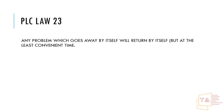Any problem which goes away by itself will return by itself — but always at the least convenient time. For example, if you go to a machine and say it is a sensor problem, you check the sensor and it looks correct, so you leave. Then again the sensor problem comes back. Monitor the machine — check signal quality, distance, and signal status to catch intermittent faults properly.